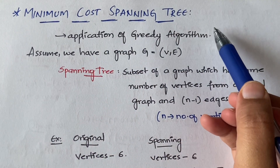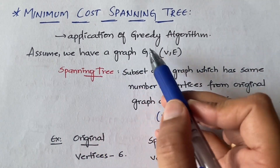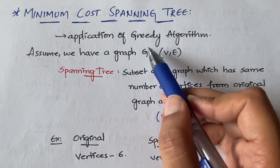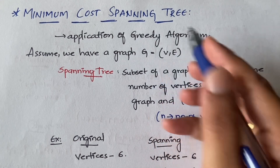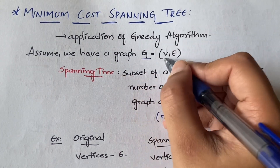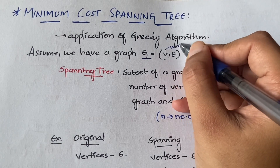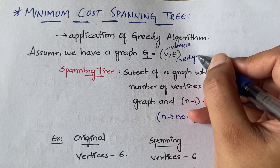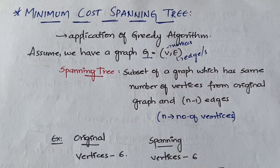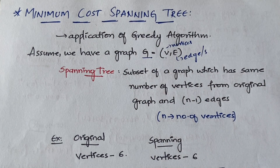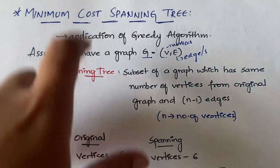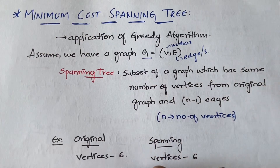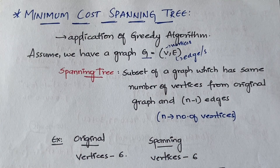It is an application of the greedy algorithm. Assume that we have a graph G, which equals the set of V comma E. Here G represents a graph, V means vertices or vertex of a graph, and E means edges of a graph. From a given graph we have to get a spanning tree with minimum cost. So let us first understand what a spanning tree is.